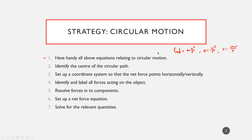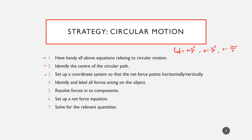Step two is to try and figure out what your circular path actually is. Especially when we start doing questions involving cars driving on banked sections of road, figuring out where the center of the circular path is becomes a little confusing. You should try and identify what the actual circular path is, visualize that object moving over time and tracing out a path in space, then visualize where the center of that circle is.